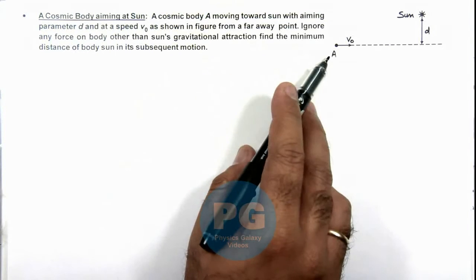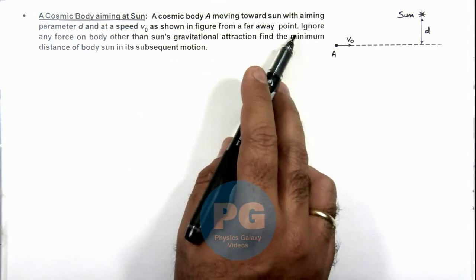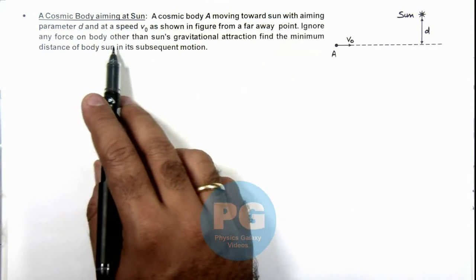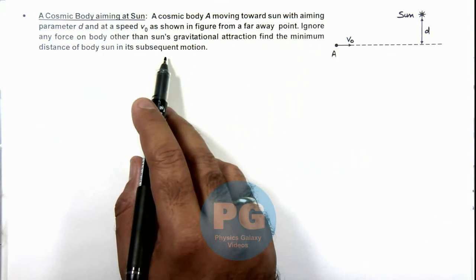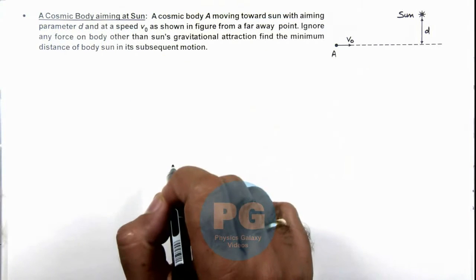From a far away point, we can ignore any other force on body other than sun's gravitational attraction. We are required to find the minimum distance of body from sun in its subsequent motion.